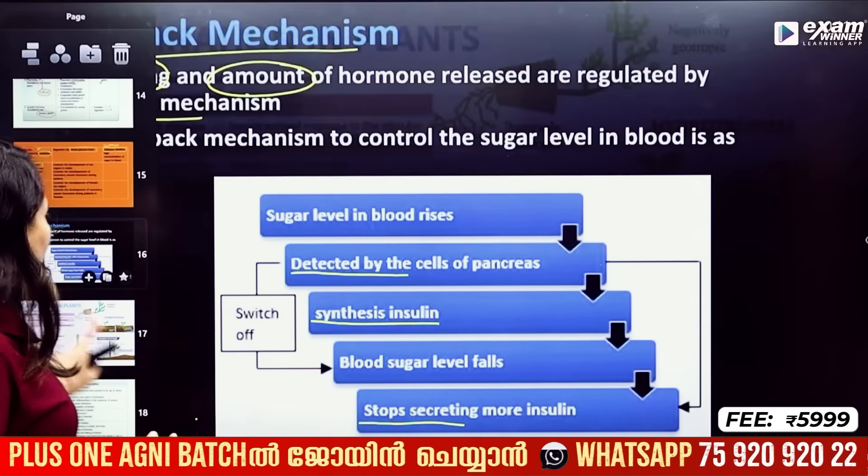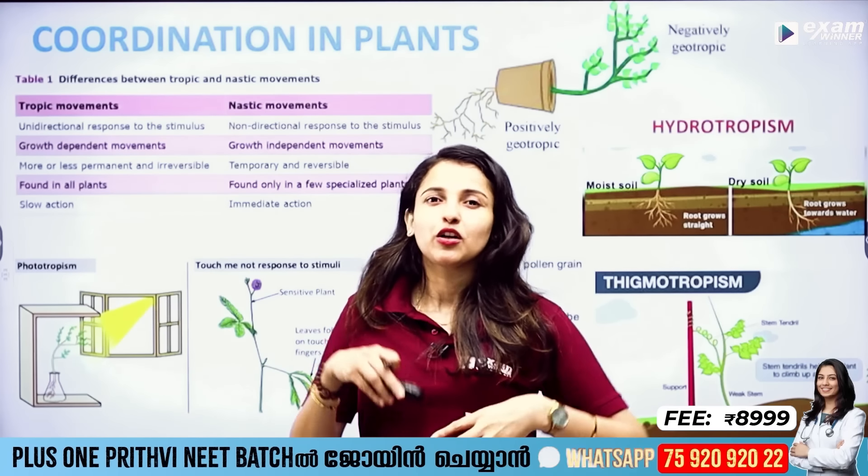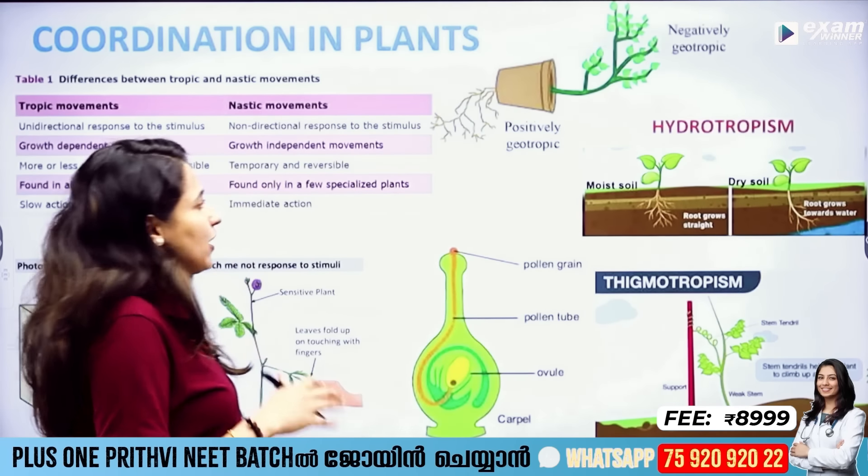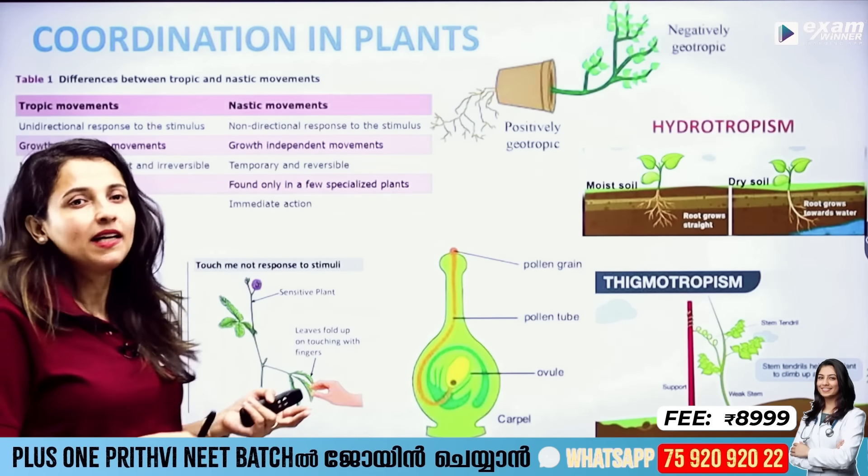Now we say that plants also have growth and movements. Plants have no nervous tissue, but they have movements and growth in response to stimuli. There is a growth-dependent movement called tropic movement. When gravity acts on the plant, it will grow in response. The root grows in the same direction as gravity — this is positively geotropic. The stem grows opposite to gravity — this is negatively geotropic.